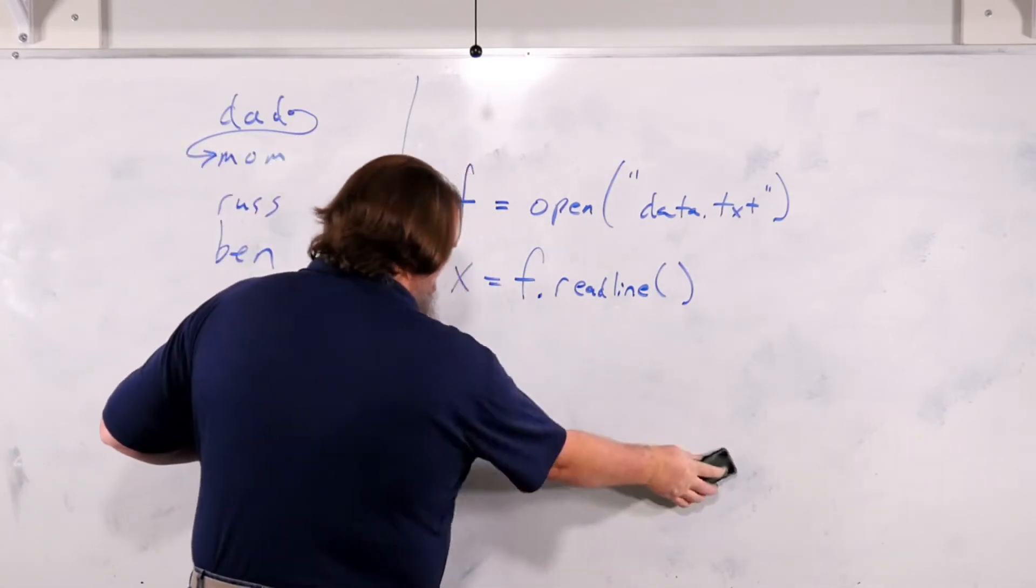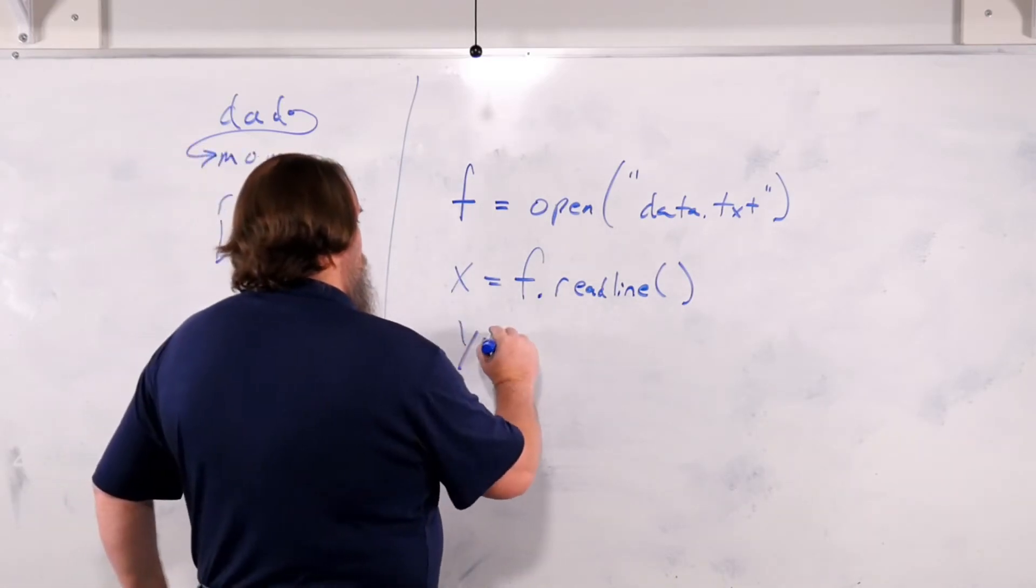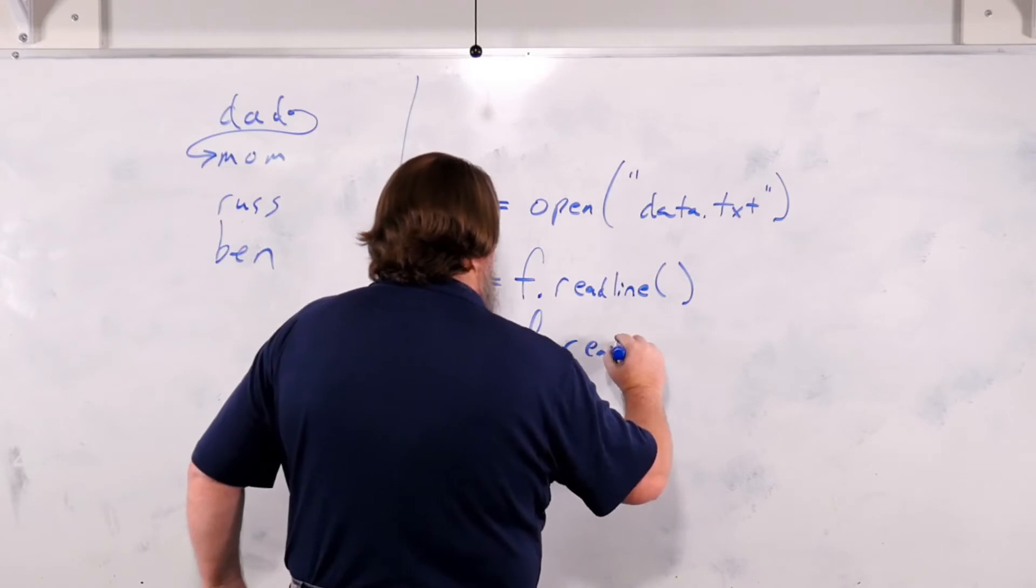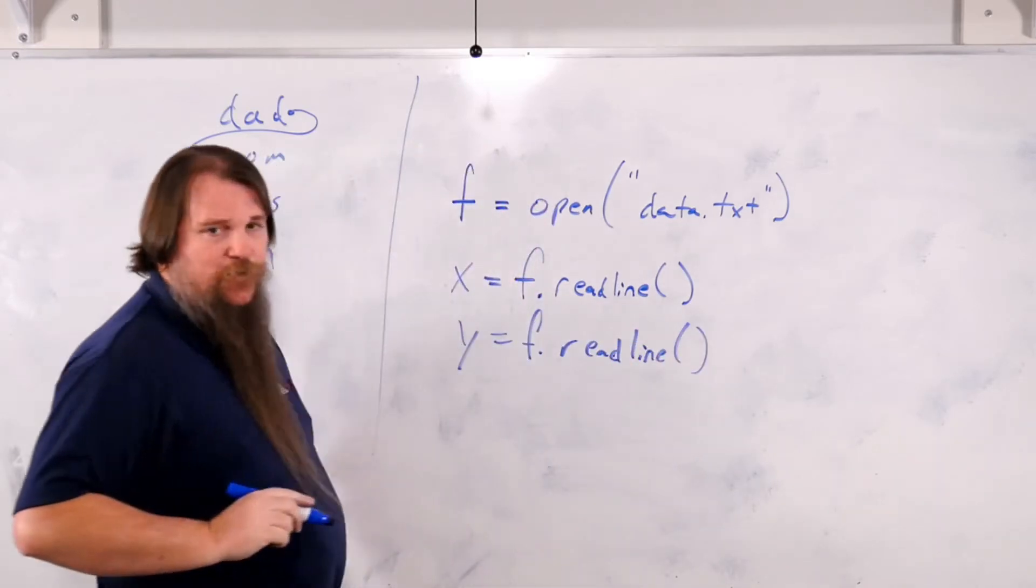If you want to read a whole bunch of lines, you can call readline multiple times. y equals f dot readline in just the same way that you can call input multiple times.